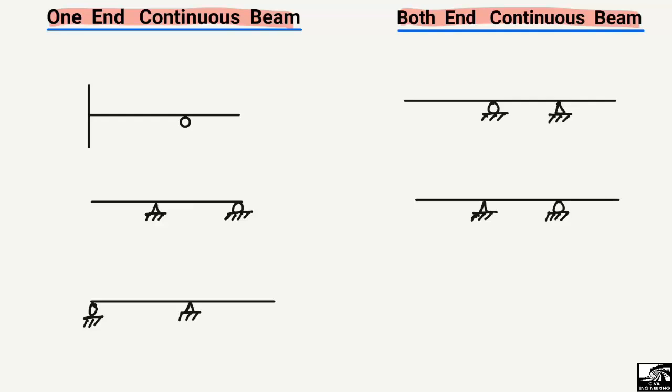Here on the left side we have three different examples for the one-end continuous beam — three different beams. And here on the right side we also have some examples for the both-end continuous beam.